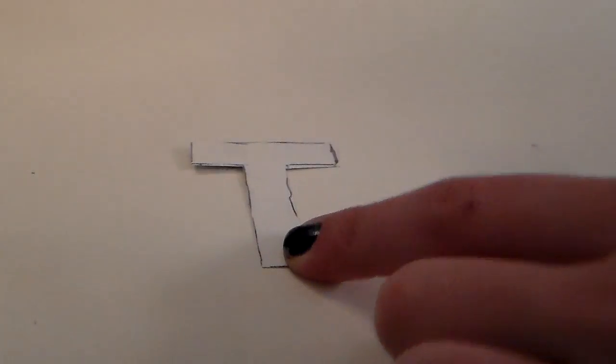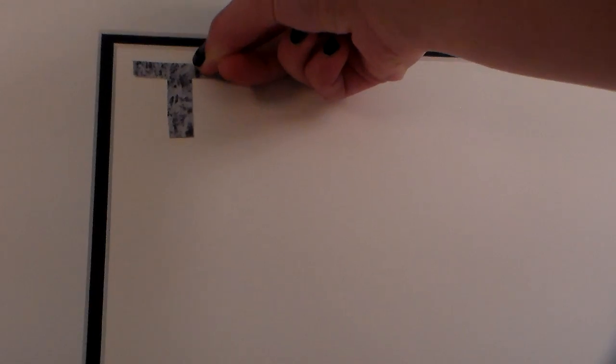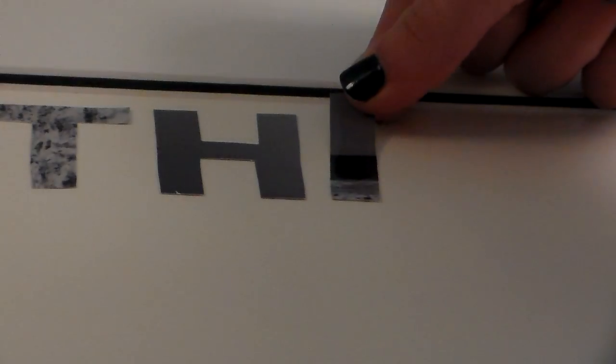Now all that's left to do is put them on your canvas or piece of paper. I'm using this fancy little glue thing I got at Michael's, but you can use tape or regular glue. Just put all the letters onto the canvas the way you want.